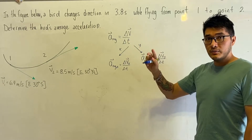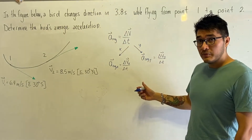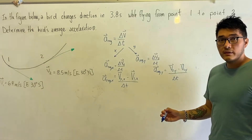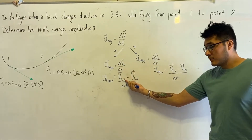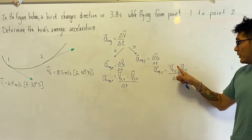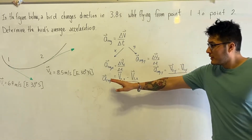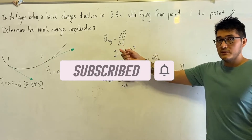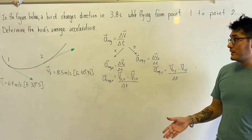So this equation was hiding two equations: the average acceleration along the x and the average acceleration along the y. We can further simplify both. The change in velocity along x is v2x minus v1x, and the average acceleration along y is v2y minus v1y. Once we have the components of average acceleration along x and y, we're going to recombine them to get the magnitude of the average acceleration — first break into components, then recombine.